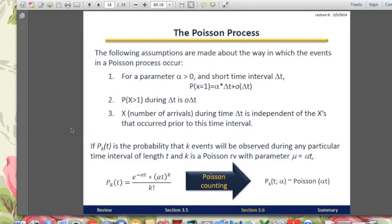Besides the formula in the previous slides, we can also use this one here. So if p is the probability that k events will be observed during any particular time interval of length t, and k is a Poisson RV with parameter mu equals to alpha t, then we can use this one. It's very handy to use it.